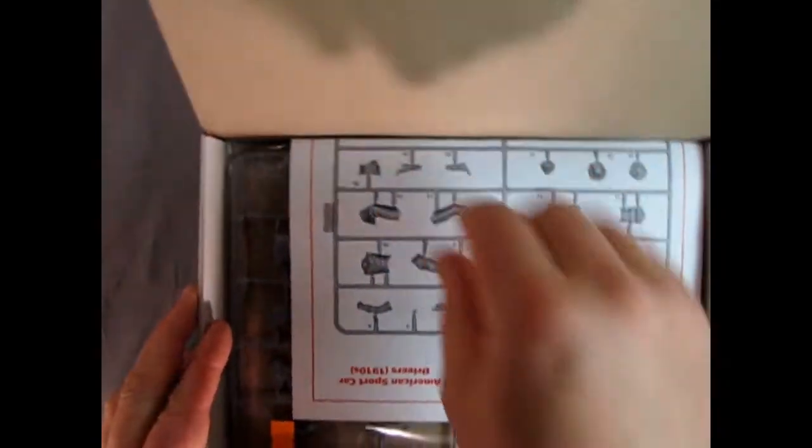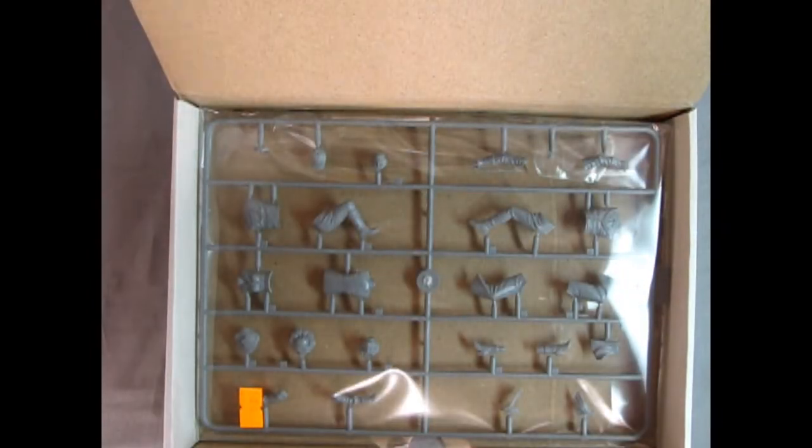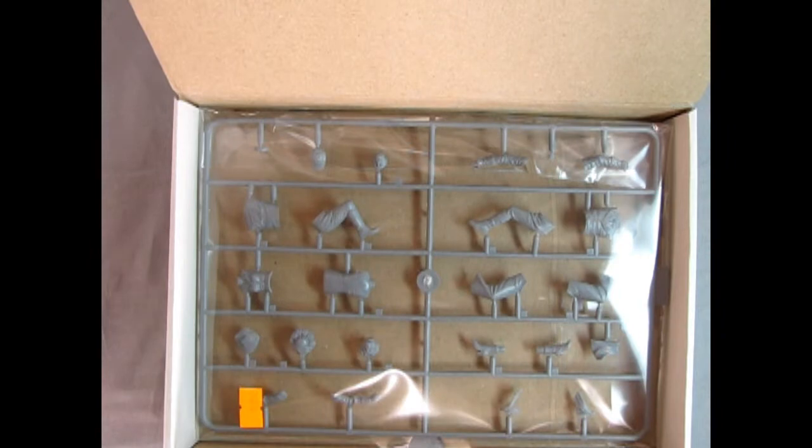So just by opening this up, you can see the wonderful instructions, which Danny the dog will go over in a minute. And there's the plastic components underneath. Now you only get one sheet in here, but still, we'll take a look at how great it is.